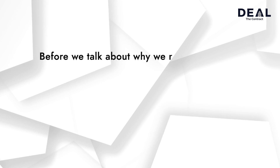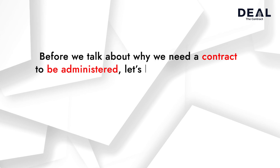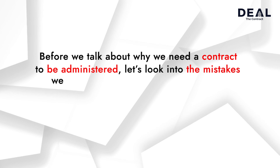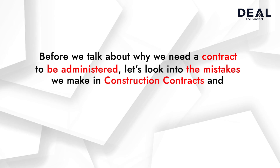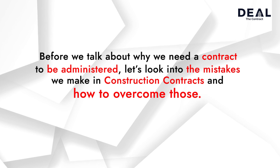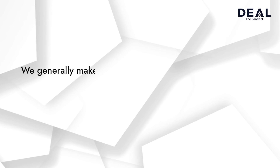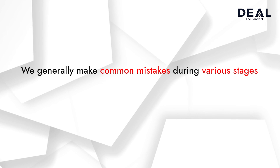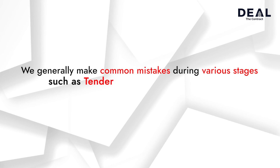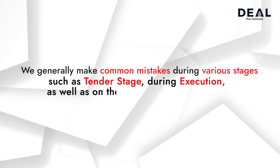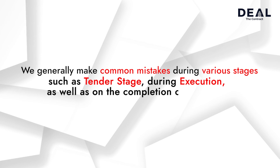Before we talk about why we need a contract to be administered, let us look into the mistakes we make in construction contracts and how to overcome those. We generally make common mistakes during various stages such as the standard stage, during execution, as well as on the completion of a project.